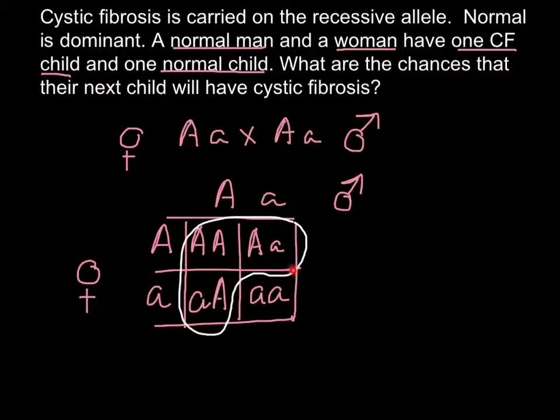We would say that 75% would be normal, or as you see here, 3 out of 4. And 25% - there is a chance that a child would be affected, or 1 out of 4.